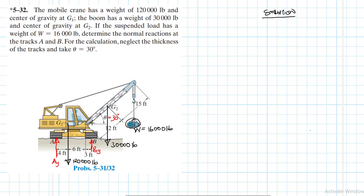Now there is something we need to do before we start calculating. Since we are going to take moments, let's take moments about point A so that we avoid subtractions. So we say summation of moments about point A equals zero, with anticlockwise being our reference positive.